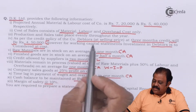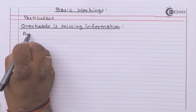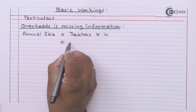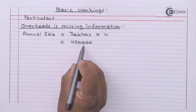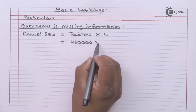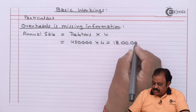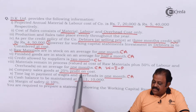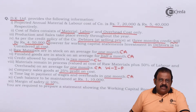In case of debtors, they say that debtors at sale price at three months credit will be four lakh fifty thousand. This is given in the question. We need to find out annual sales, so multiply by four. So we have annual sales of eighteen lakhs. The company sells goods at twenty-five percent profit on cost — with this information we can find out total annual cost.